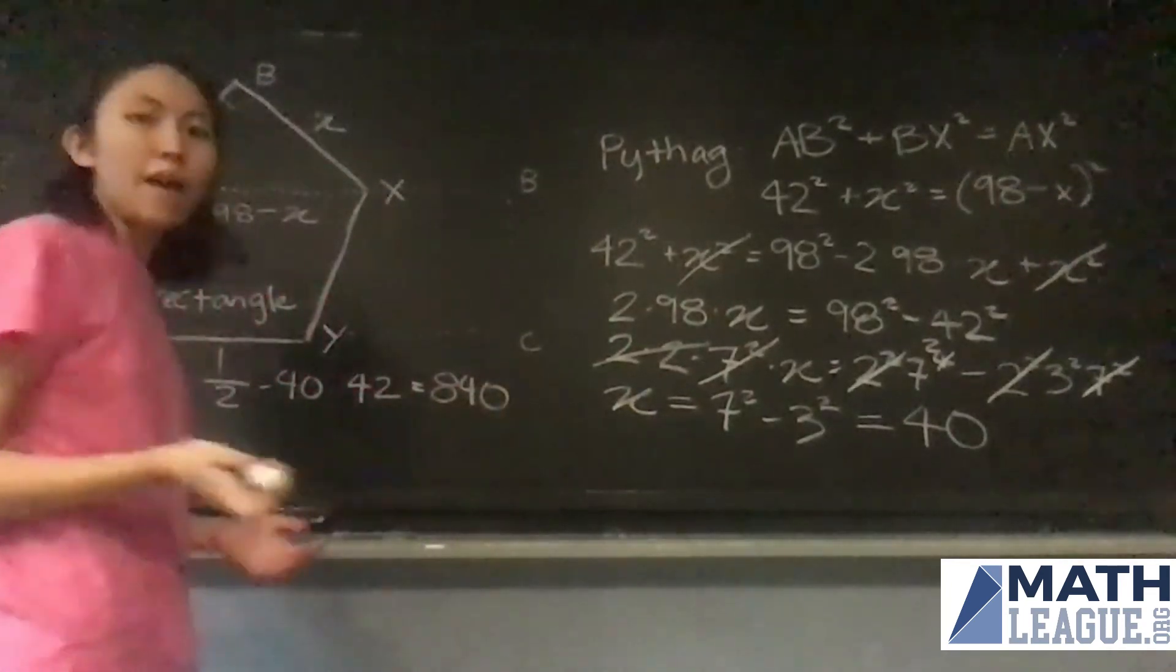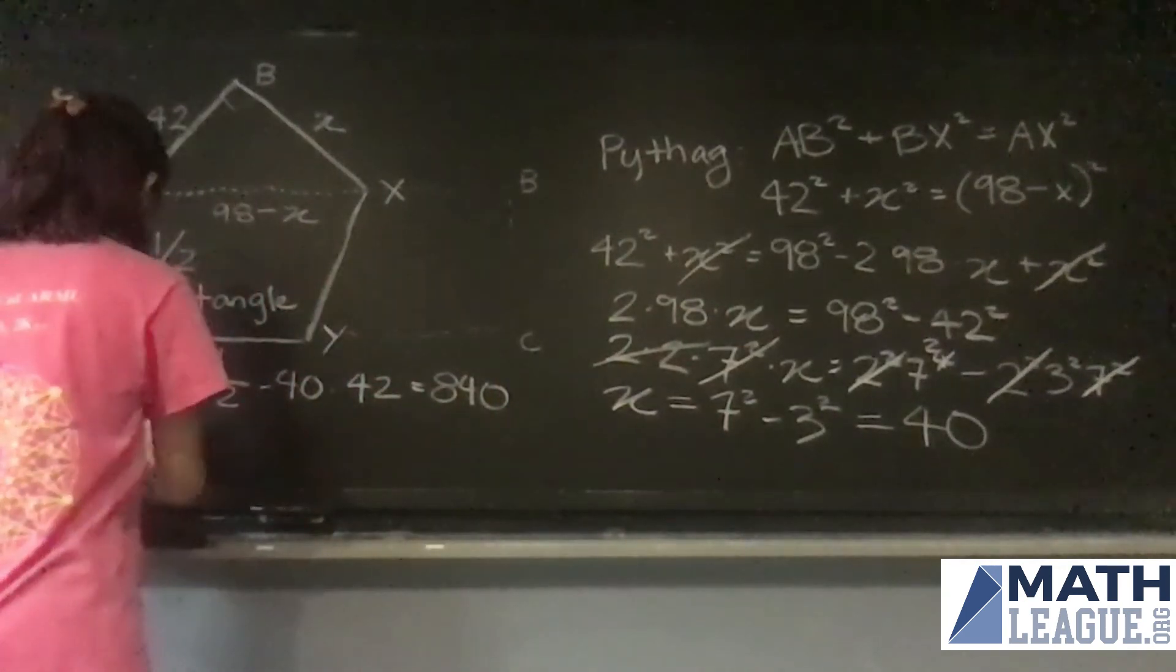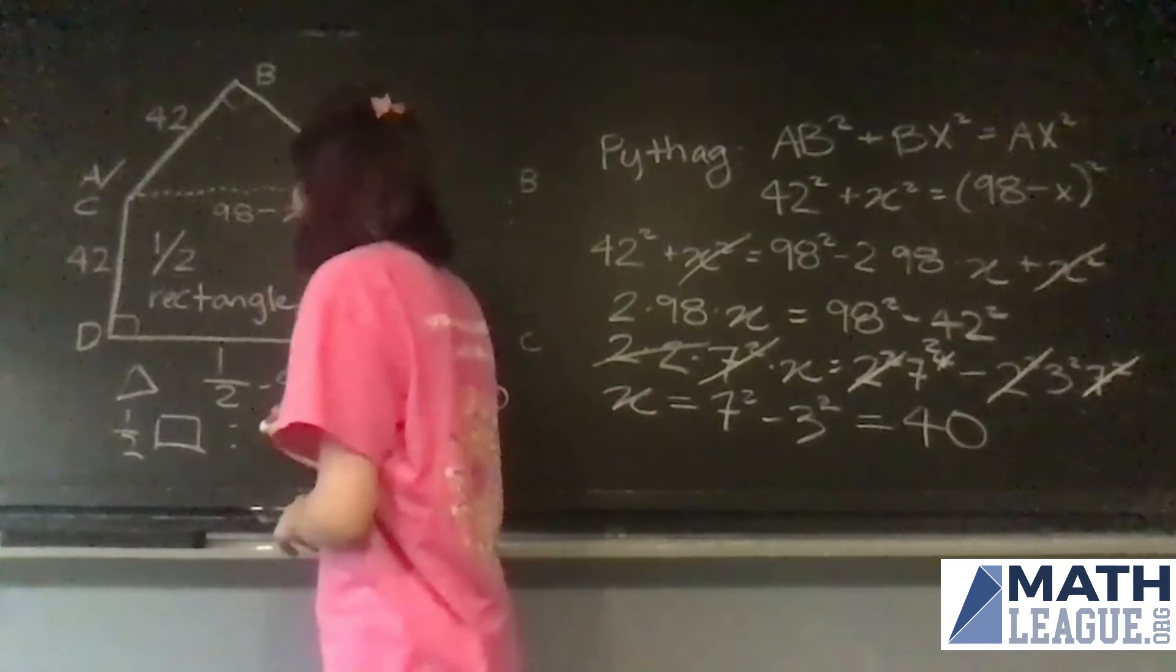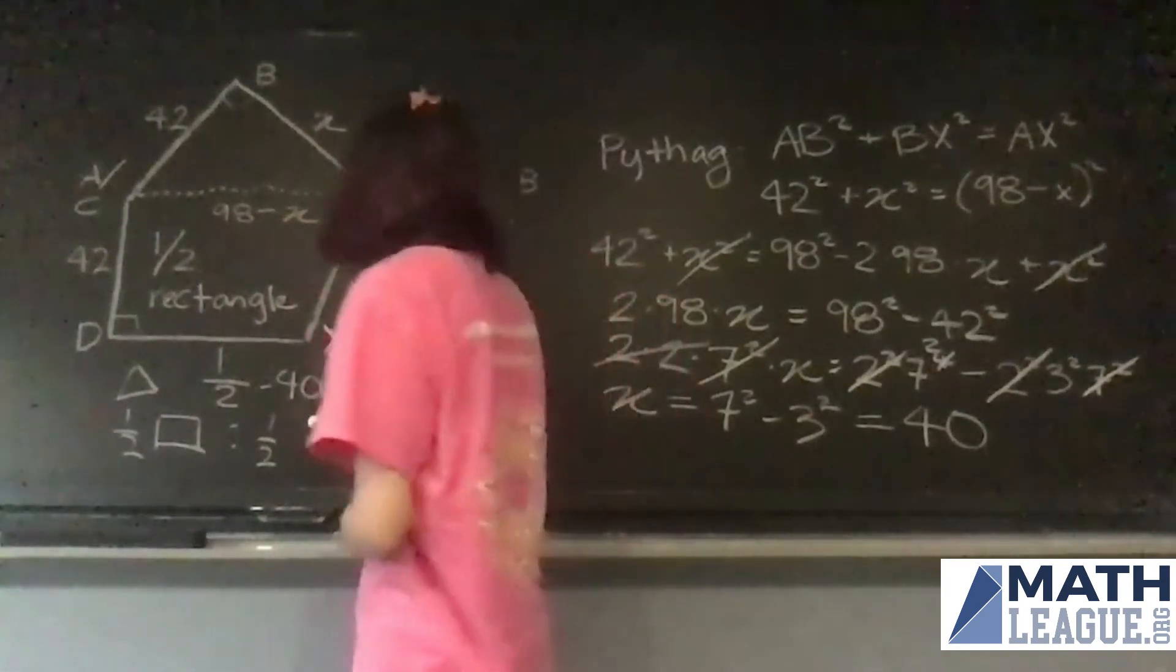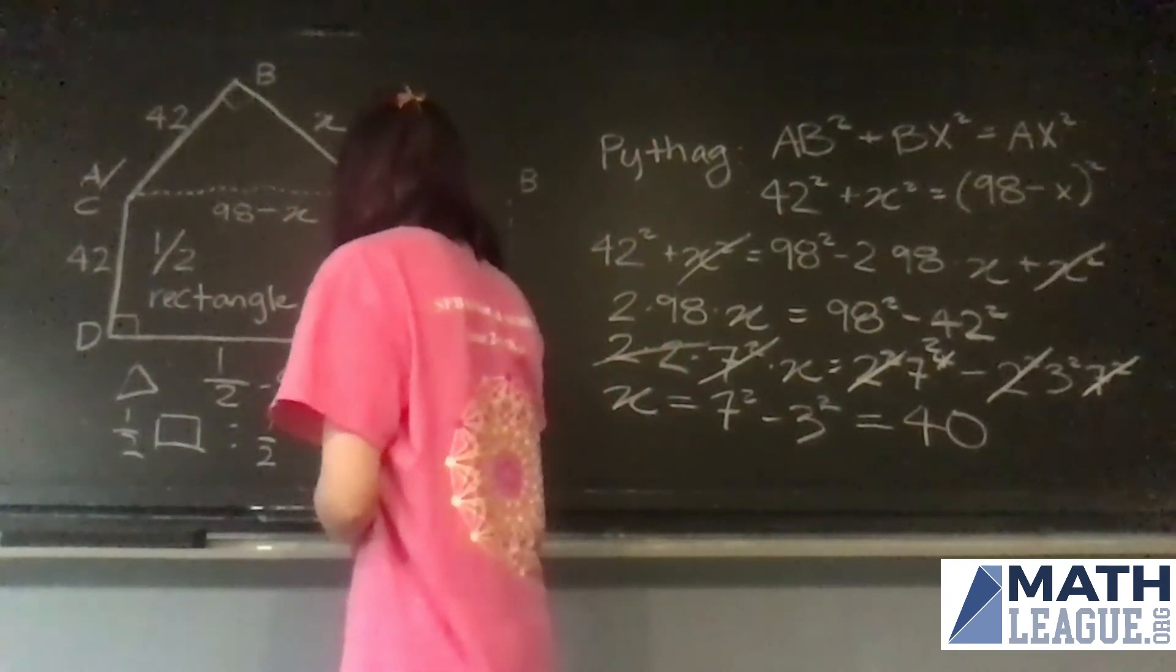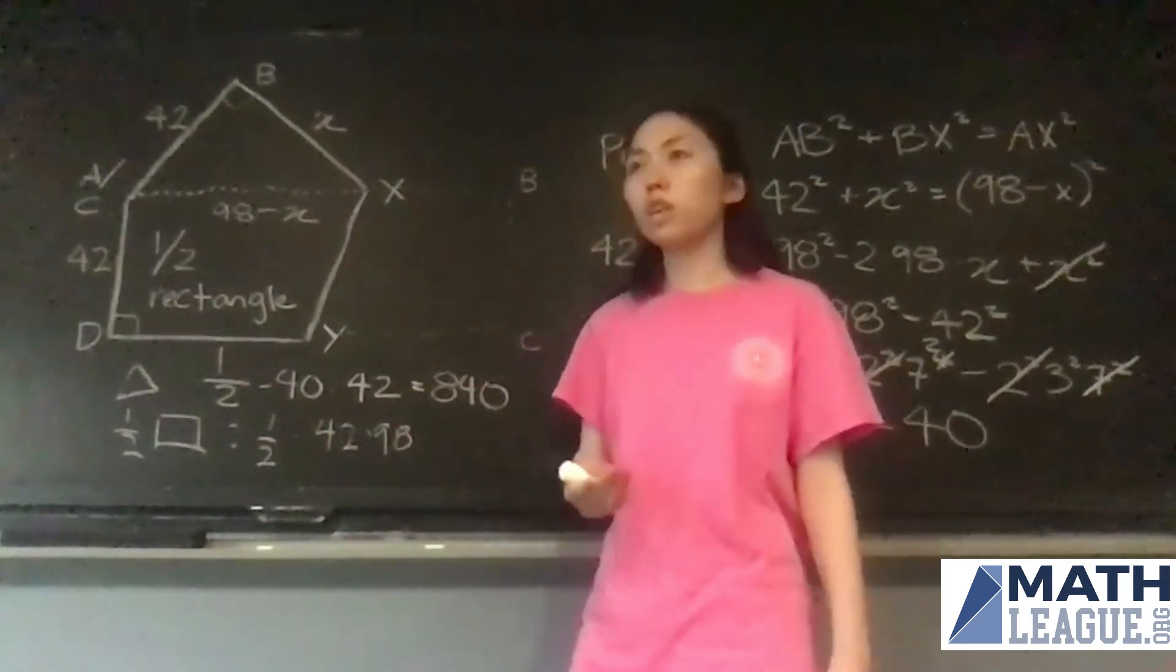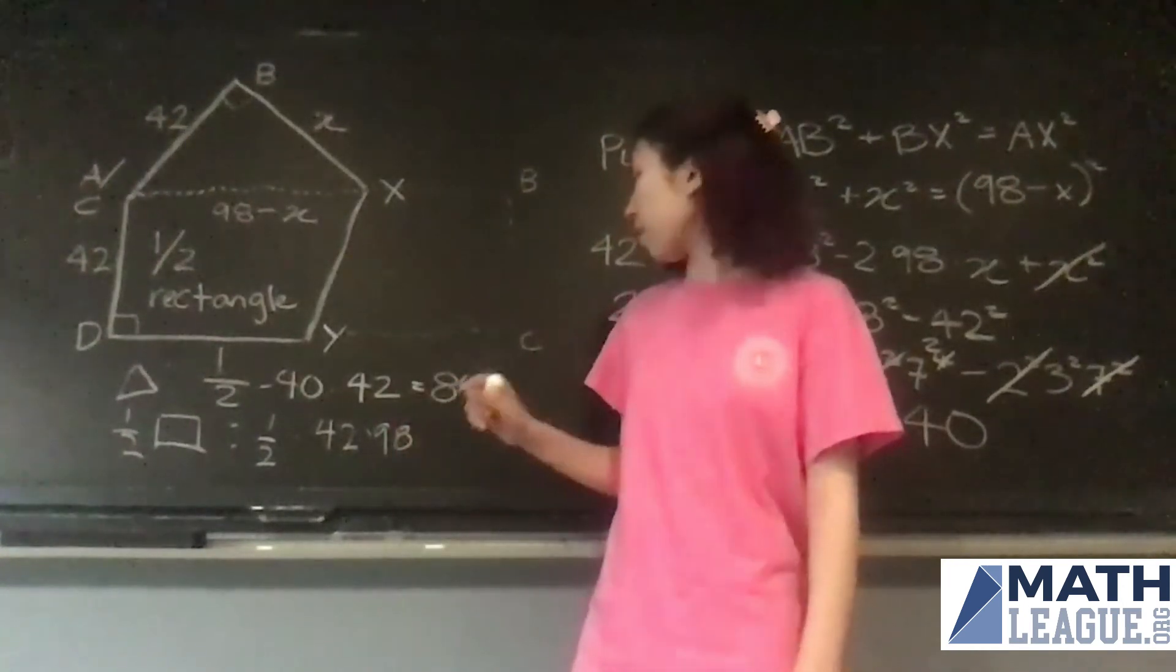And we want half of the rectangle next. So one half of the rectangle is then equal to one half times 42 times 98, and that's just 42 times 49, which is 42 times 50, which is 2100 minus the 42, because we only wanted 49 of them.